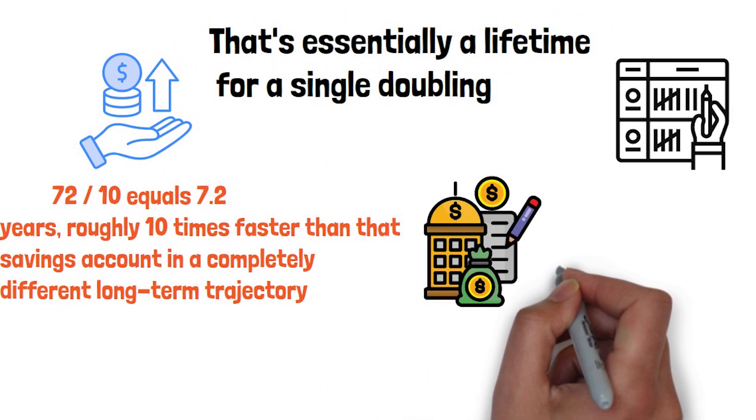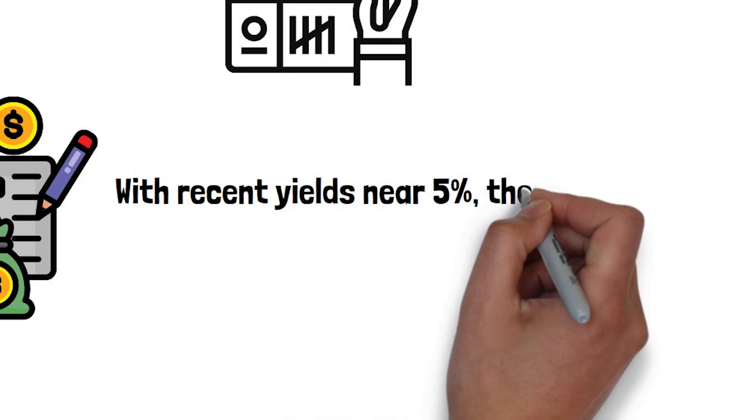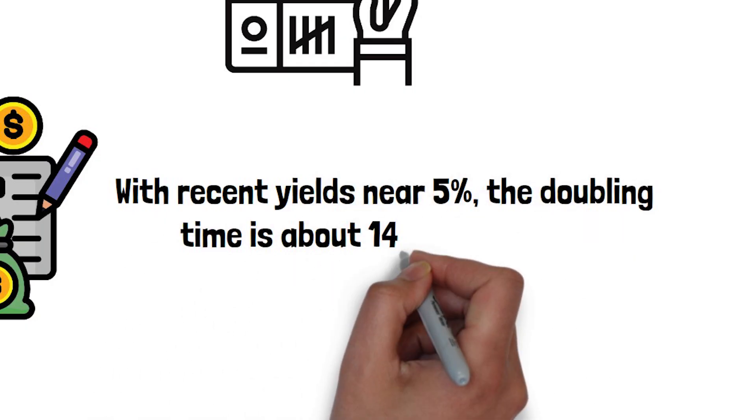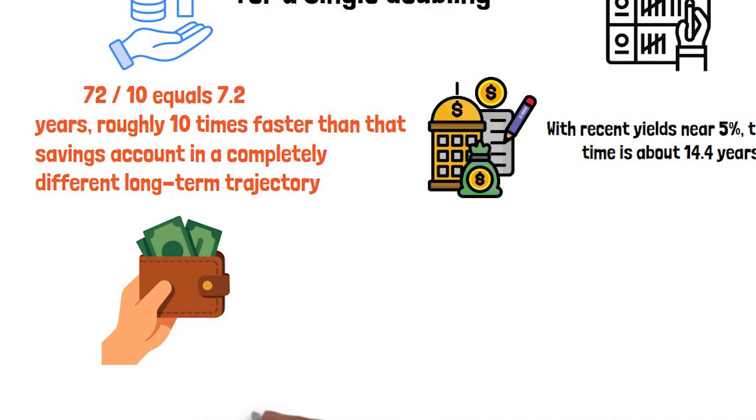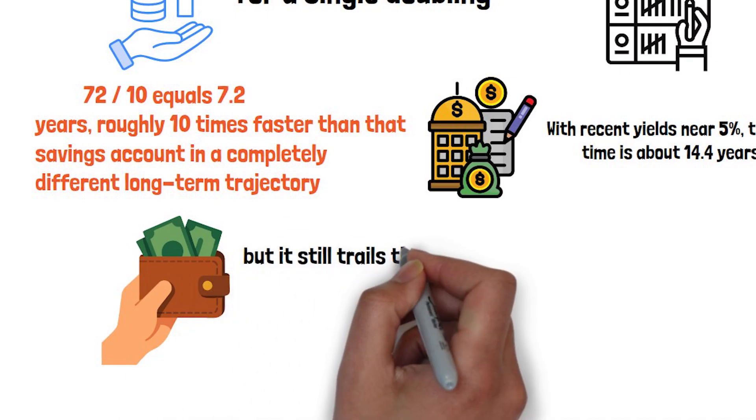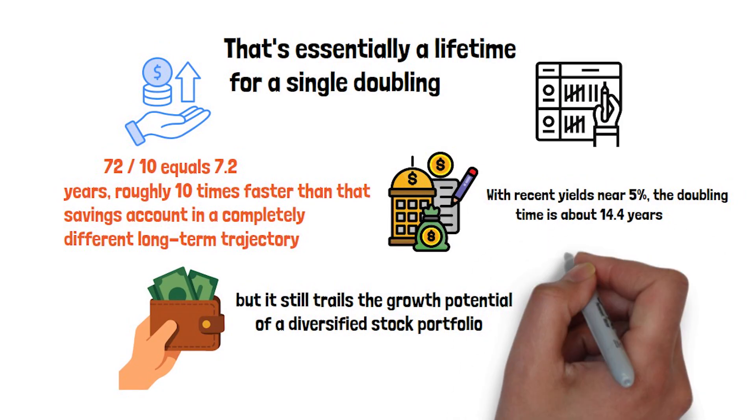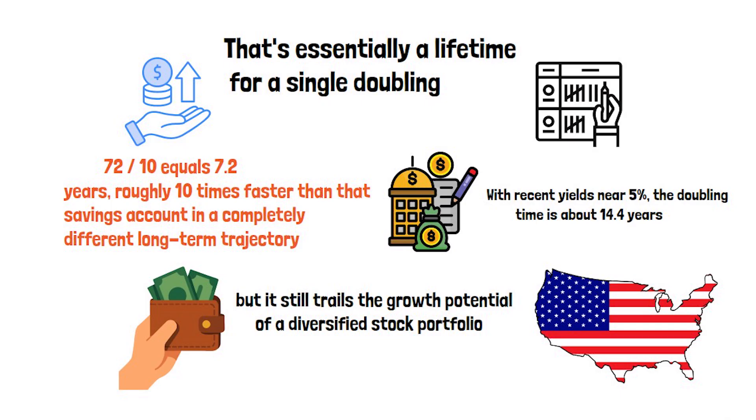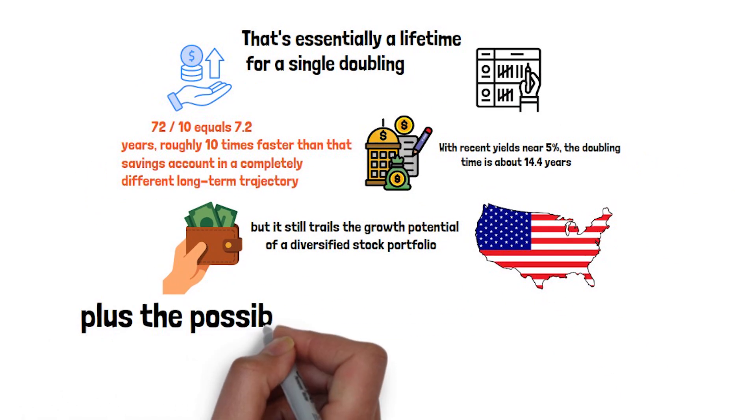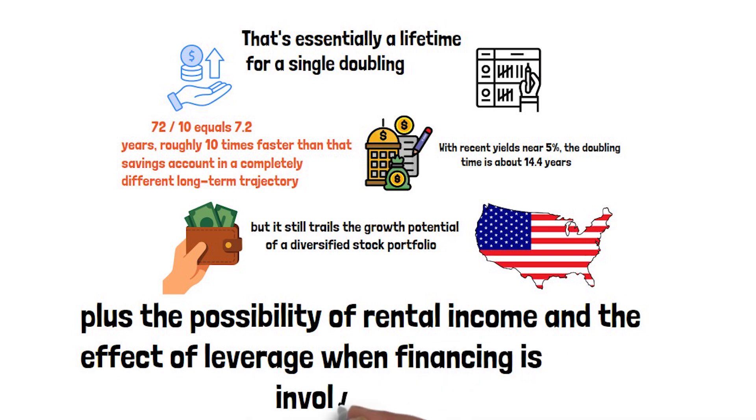In between those extremes, you have assets like short-term U.S. treasuries. With recent yields near 5%, the doubling time is about 14.4 years. That's a noticeable improvement over cash, but it still trails the growth potential of a diversified stock portfolio. Real estate has historically averaged close to 8% annually in the U.S., which works out to a doubling every nine years, plus the possibility of rental income and the effect of leverage when financing is involved.